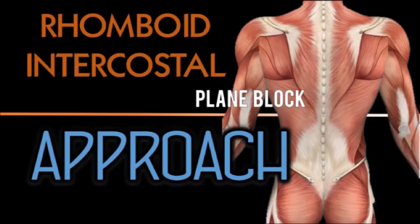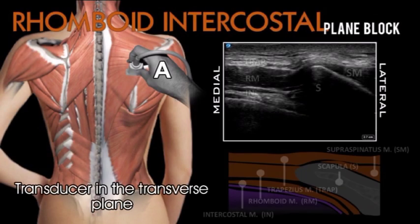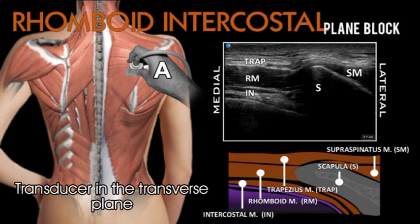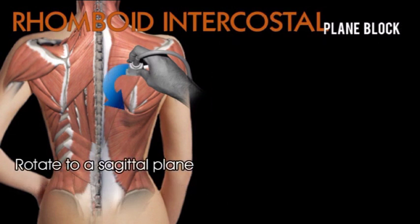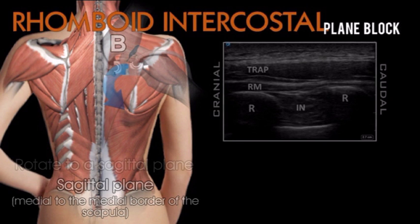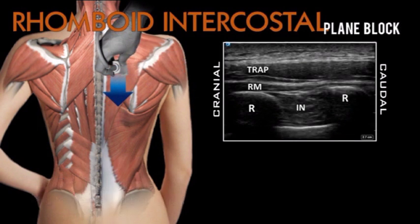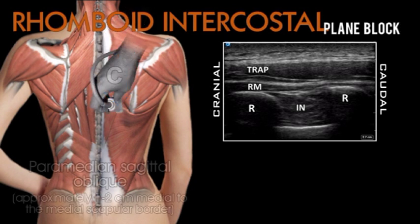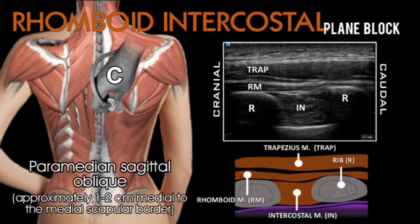Place a linear transducer in the transverse orientation over the medial border of the scapula. Identify the trapezius, rhomboid, and intercostal muscles. Then rotate the ultrasound probe 90 degrees to the sagittal plane and identify the tissue plane between the rhomboid, intercostal muscles, and the ribs.